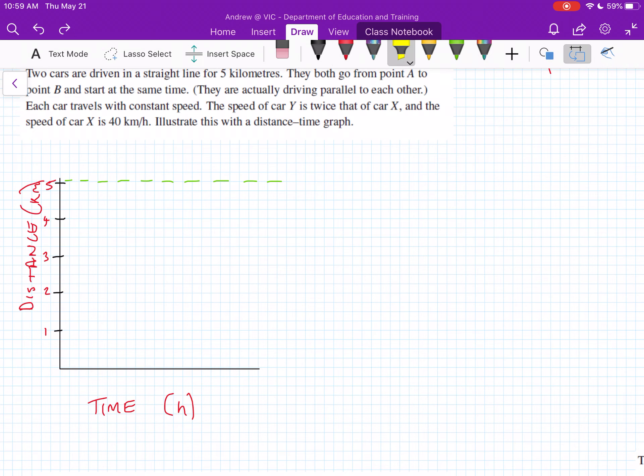Two cars are driven in a straight line for 5 kilometers. They both go from point A to point B and start at the same time, so they'll be starting from the same spot. They're actually driving parallel to each other.